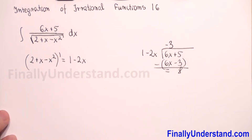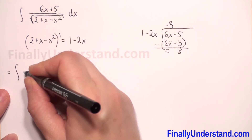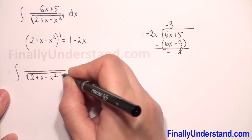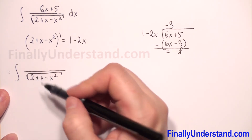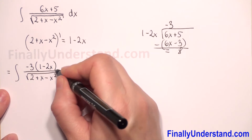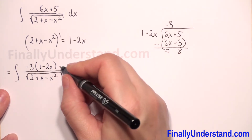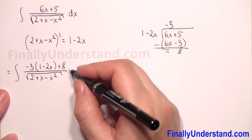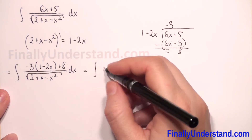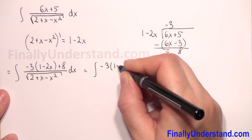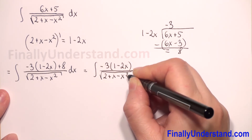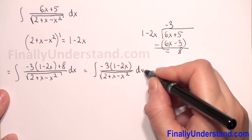Now we subtract: 5 plus 3 is 8. So we can rewrite our numerator — let me copy our integral — the numerator becomes negative 3 times (1 minus 2x) plus 8 (our remainder), over the square root of 2 plus x minus x squared. Now we can split this into two integrals.